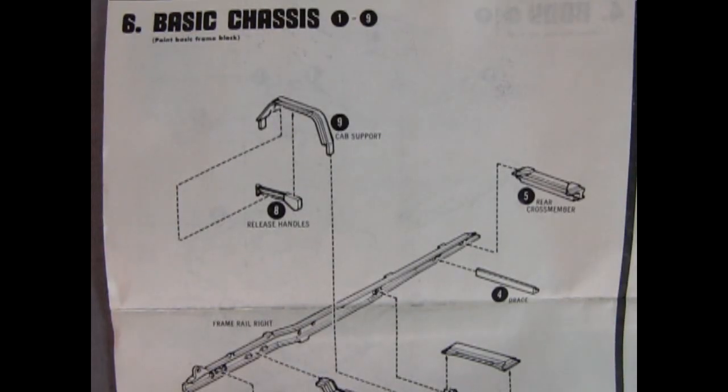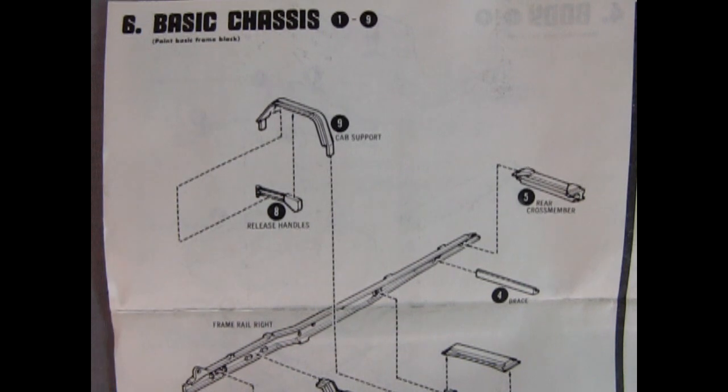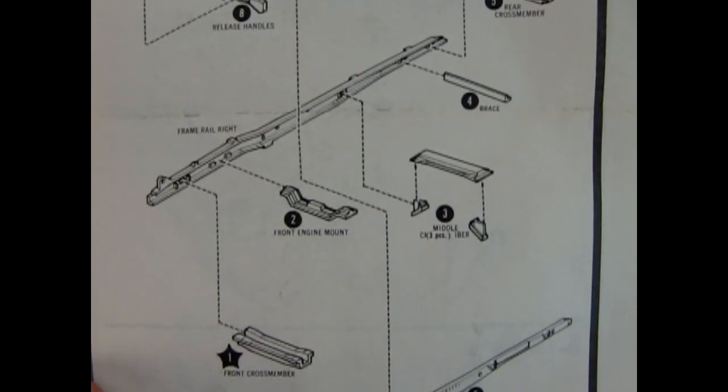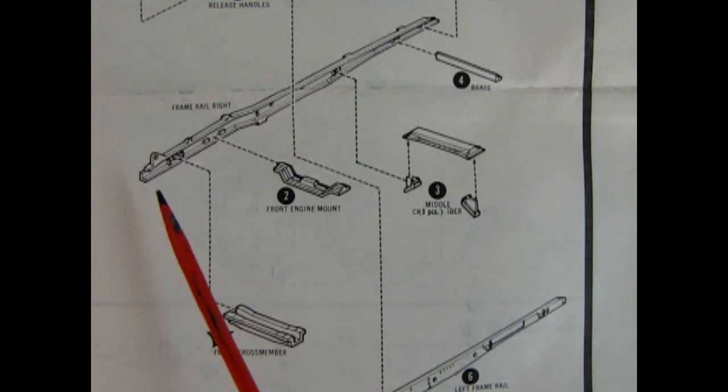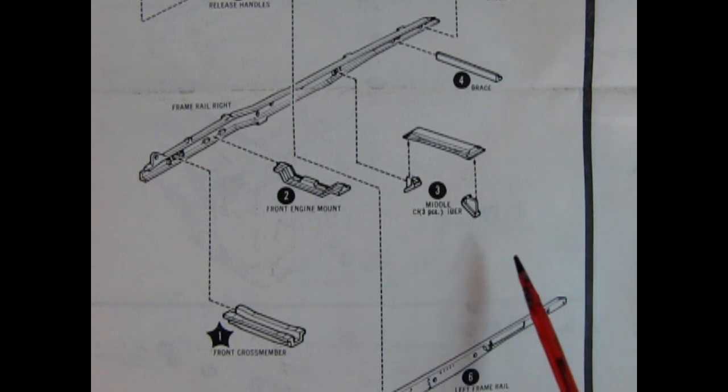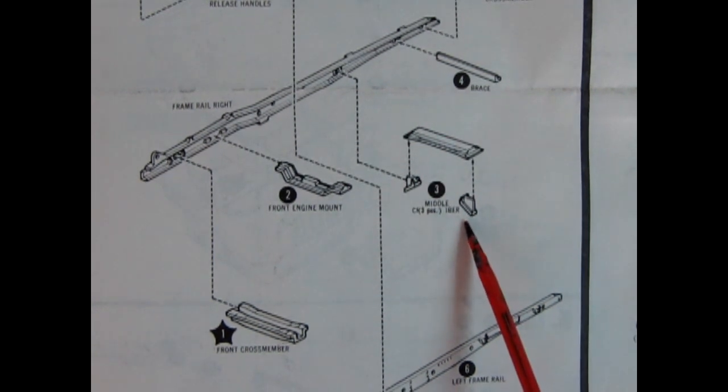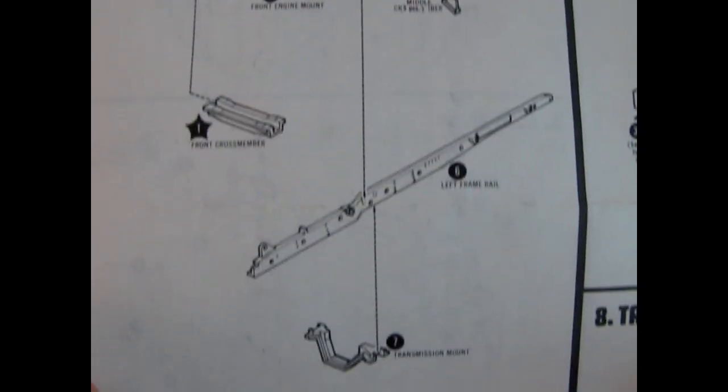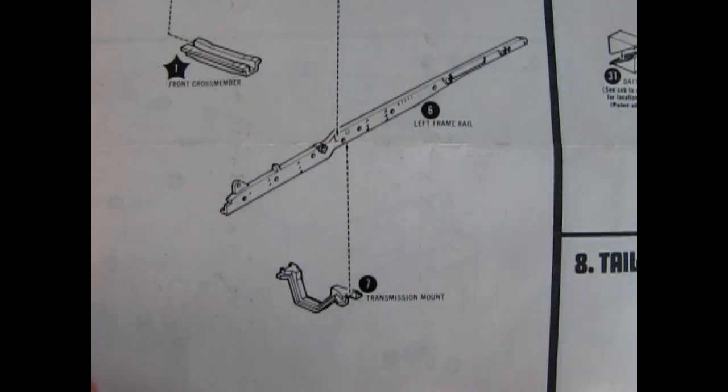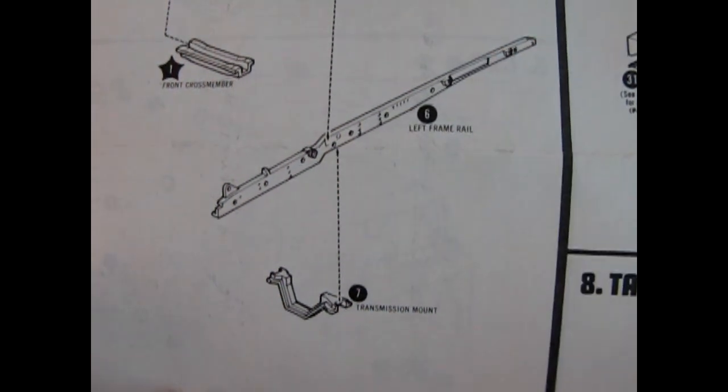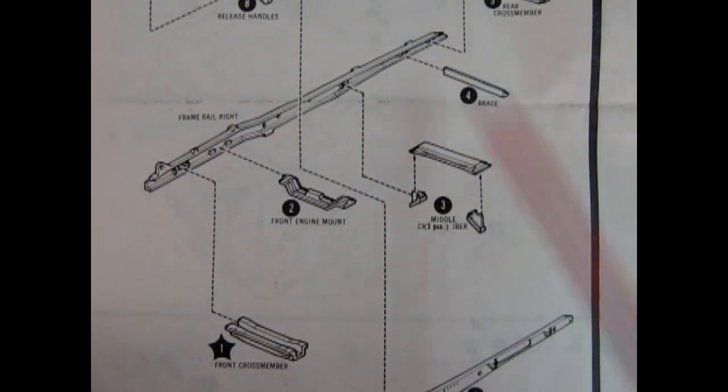Panel six shows our basic chassis assembly. Here we've got our cab support and the release handles, the rear cross member, and then we have to assemble the frame. So I'll just move this up so we can see what's going on. So you have the right side frame rail, the front engine mount, the front cross member, the middle brackets here, and the brace back here. And then moving this up again, we have the left frame rail and the transmission mount. So you want to make this all into a box up here for a nice, perfect frame.